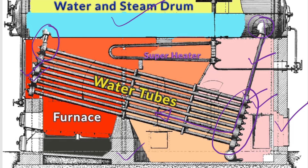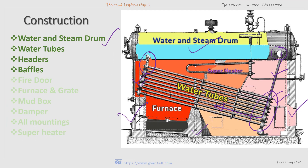The uptake header is present at the front end of the furnace and is attached to the bottom of the drum. It transmits the steam from water tubes to the drum. The steam produced goes up to the drum through these short tubes, and this is called the riser.